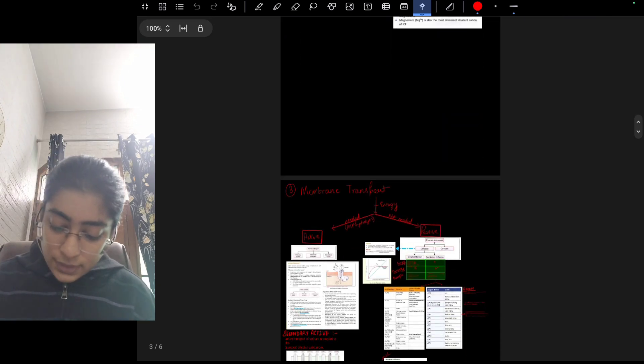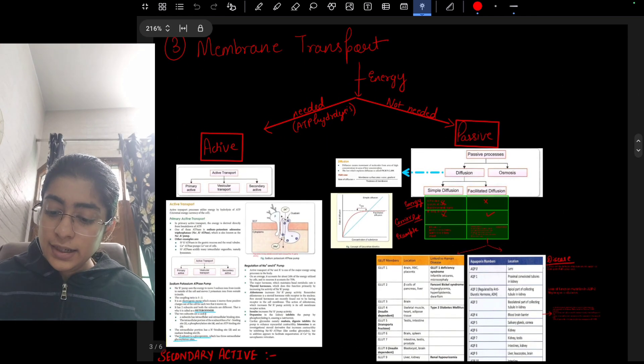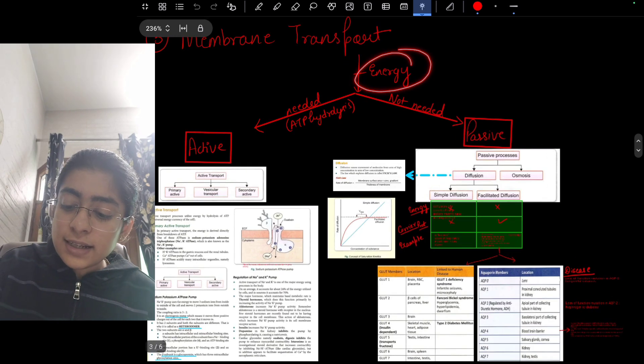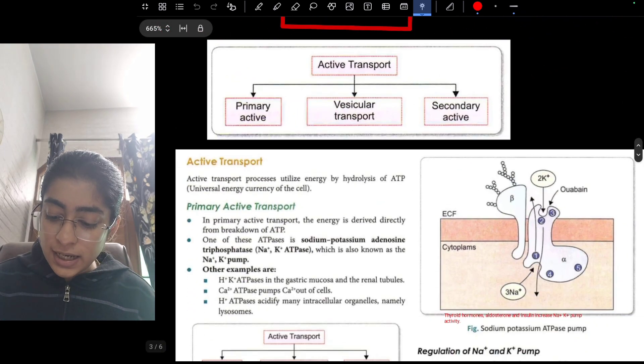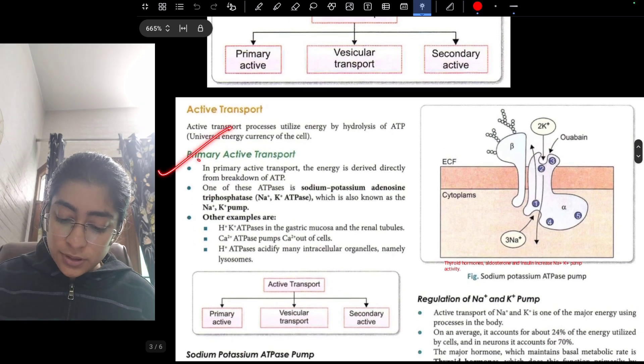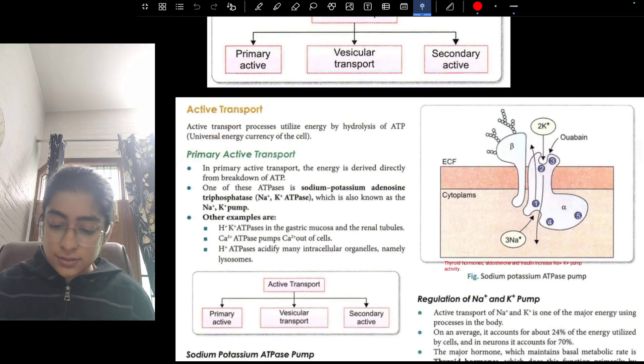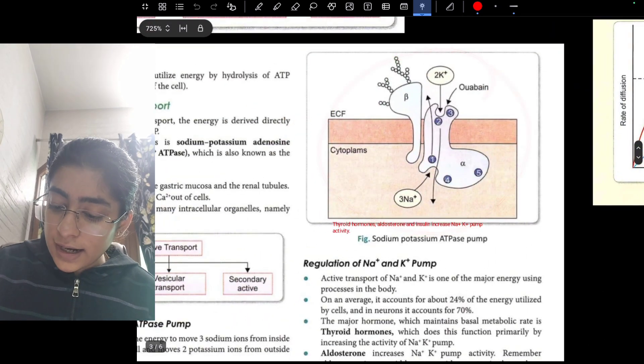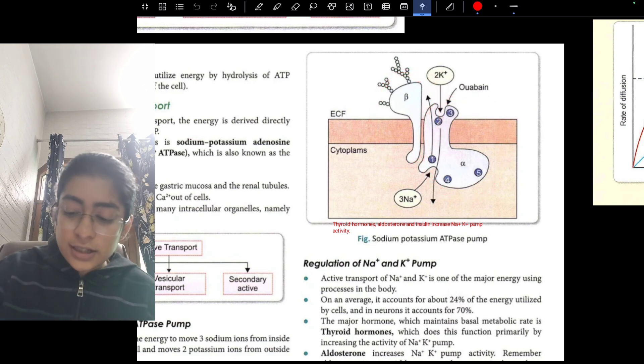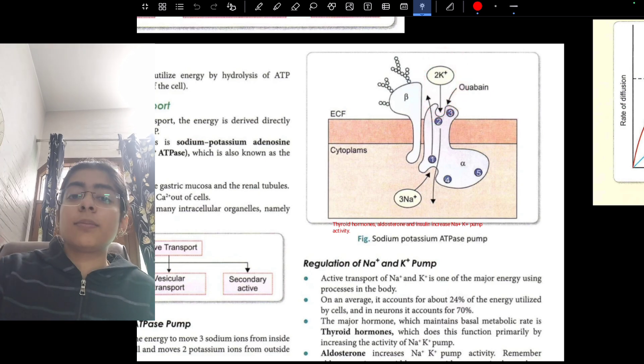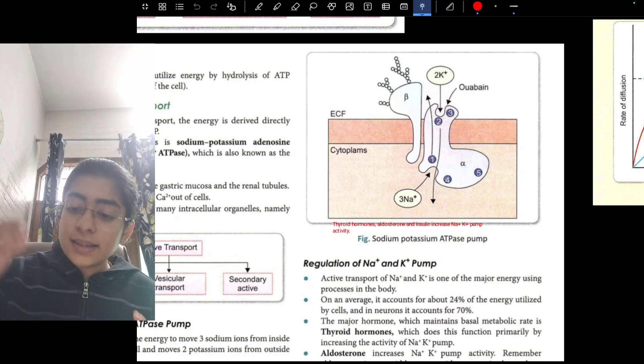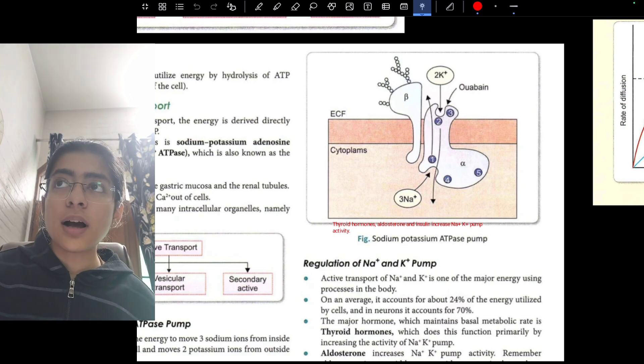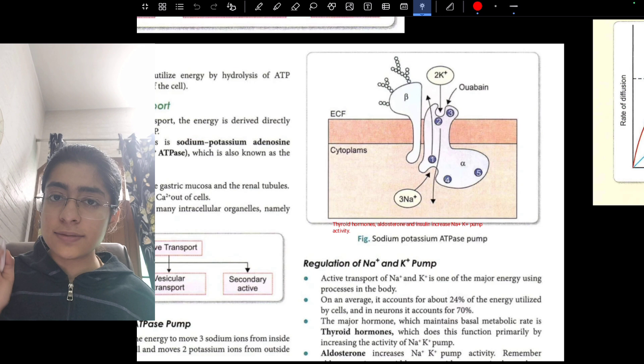Next we move on to membrane transport. In membrane transport, basically we classify on the basis of energy first. If energy needed, then active. Not needed, then passive. In active transport we are having primary, vesicular, and secondary active. In primary active transport we have sodium-potassium ATPase. This is sodium-potassium ATPase, basically for the sodium and this is for the potassium. You can see the alpha subunit and beta. This is the potassium binding site.